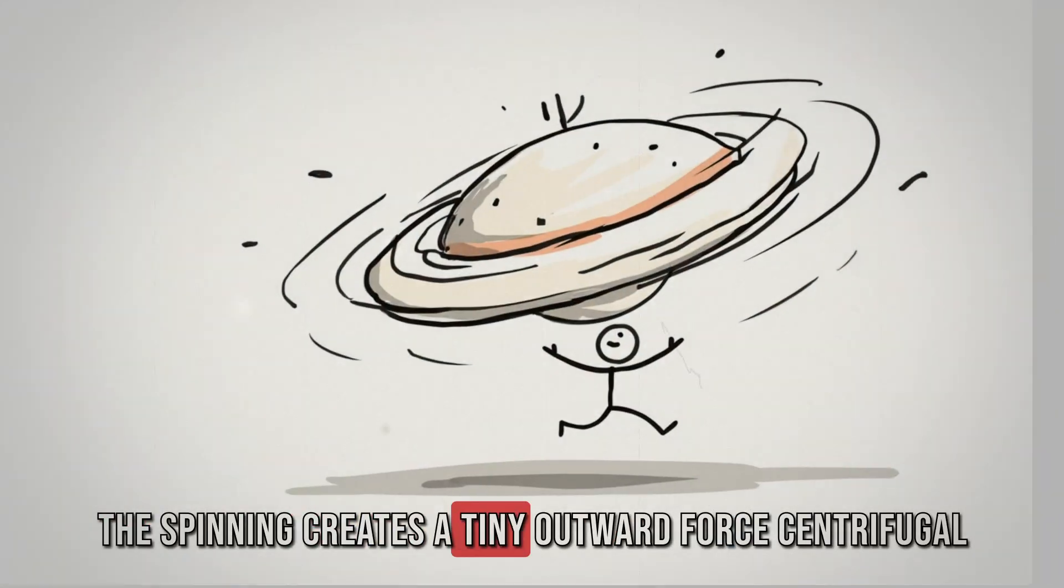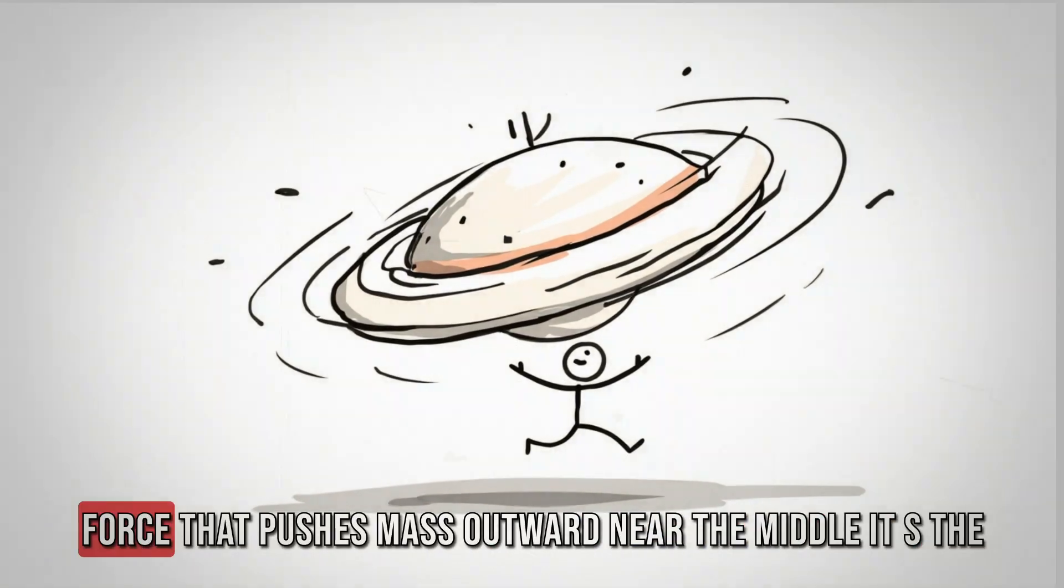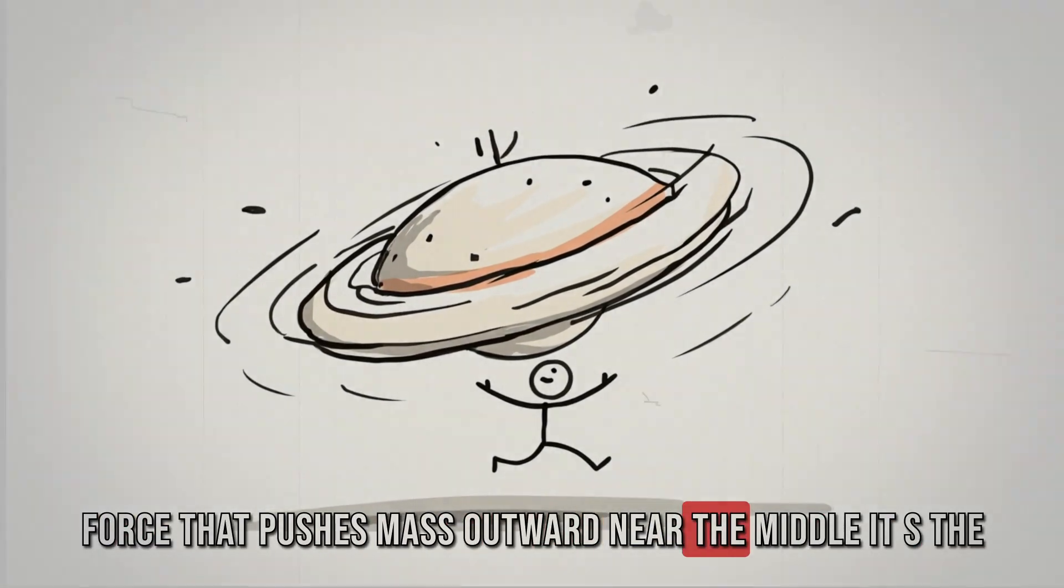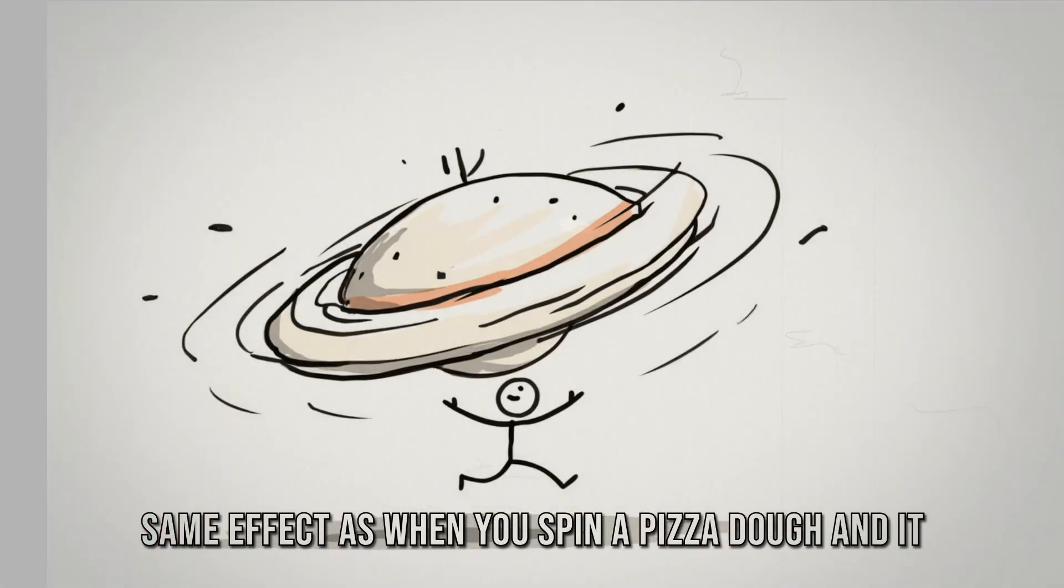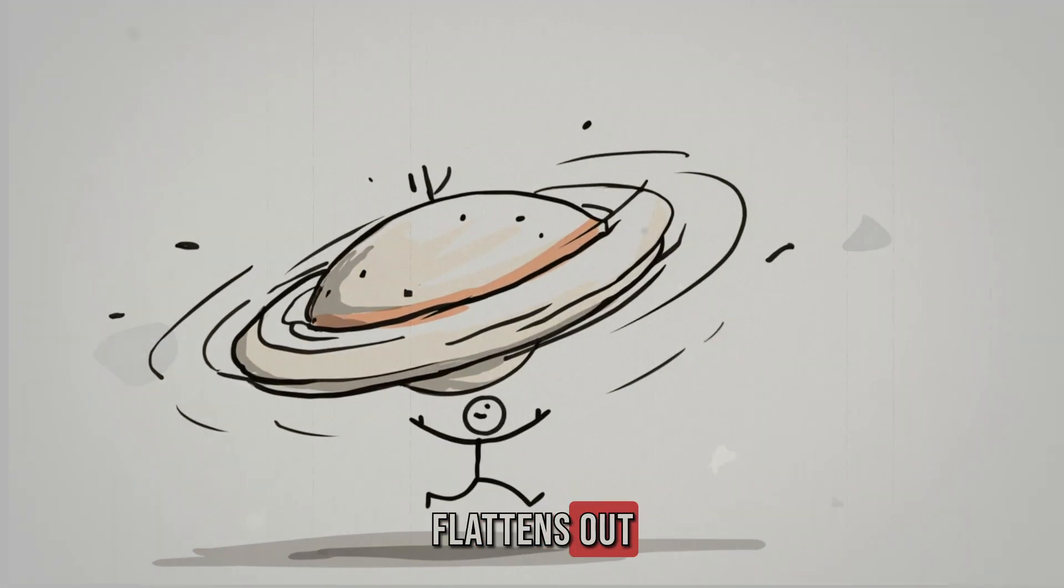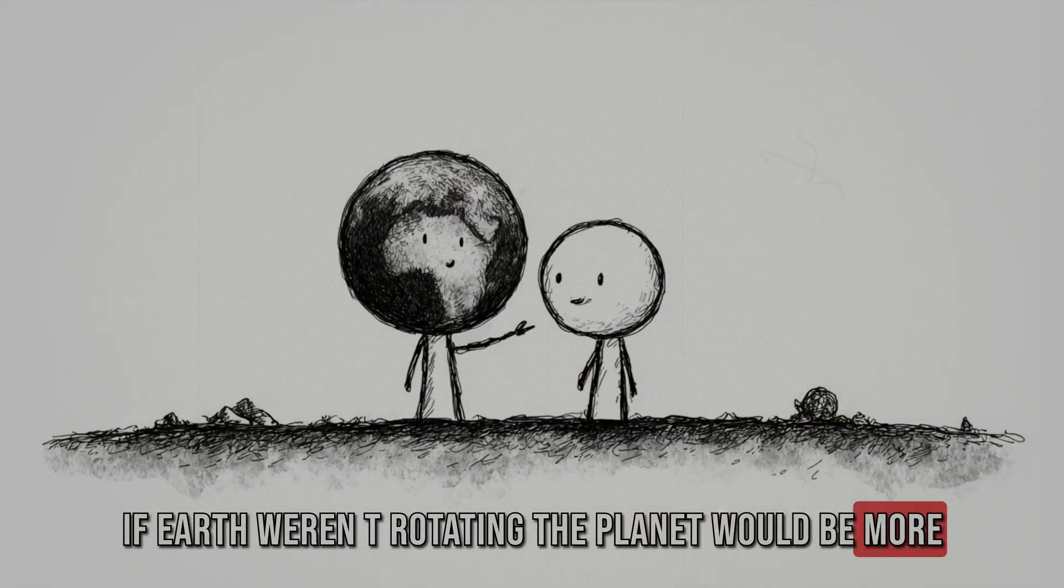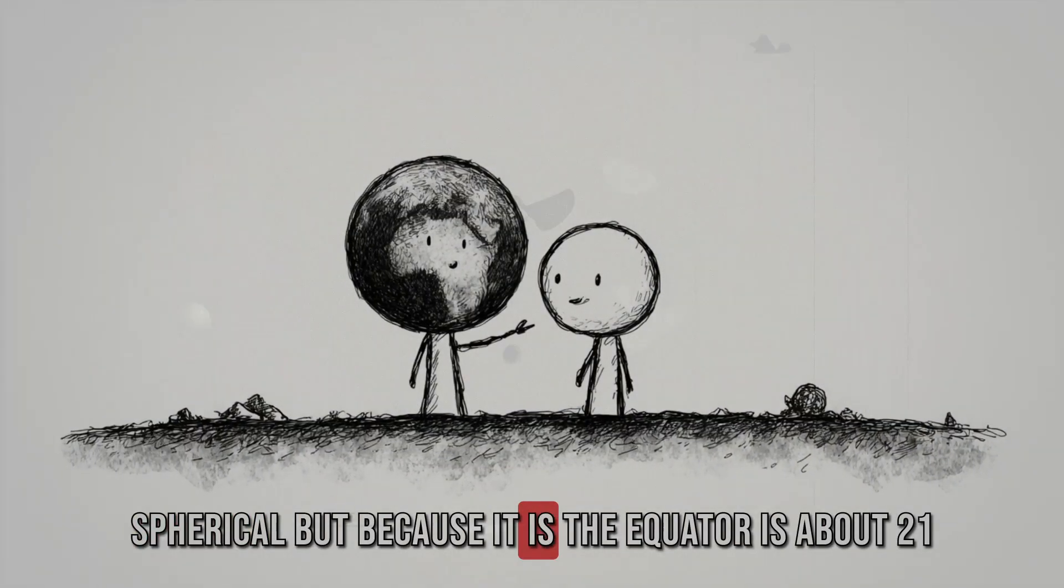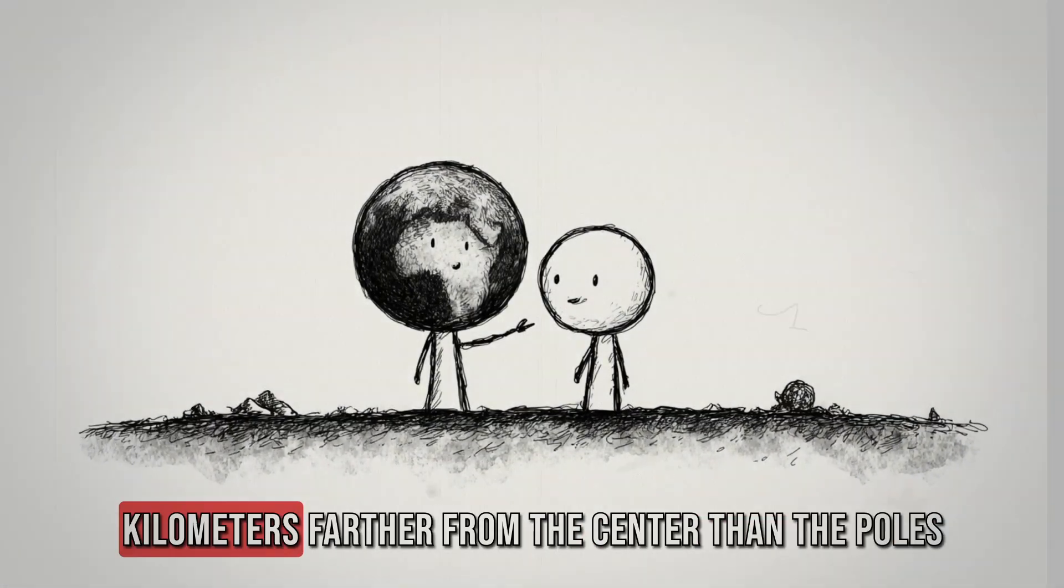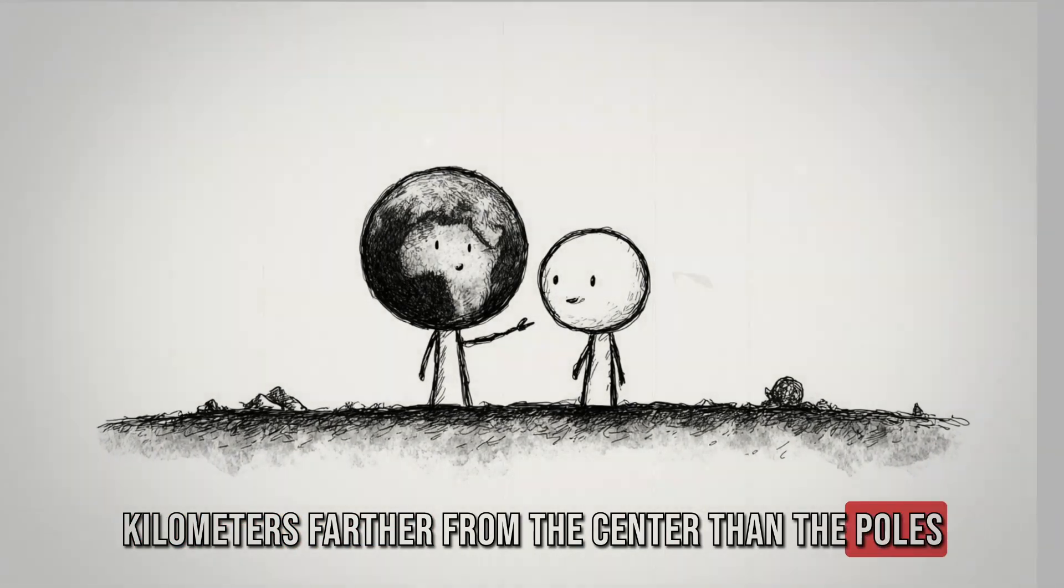The spinning creates a tiny outward force, centrifugal force, that pushes mass outward near the middle. It's the same effect as when you spin a pizza dough and it flattens out. If Earth weren't rotating, the planet would be more spherical. But because it is, the equator is about 21 kilometers farther from the center than the poles.